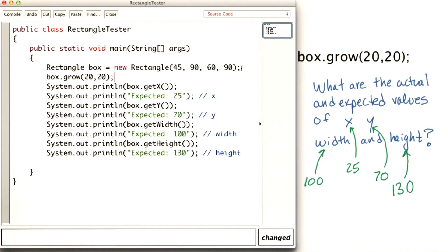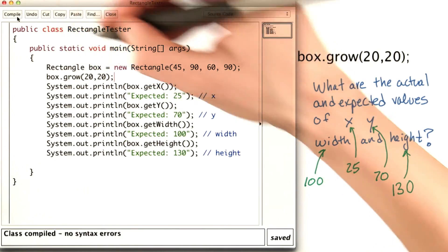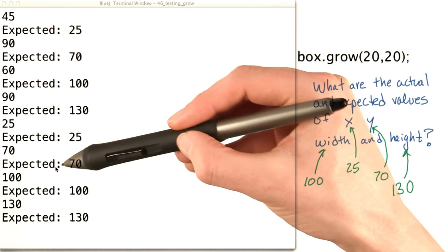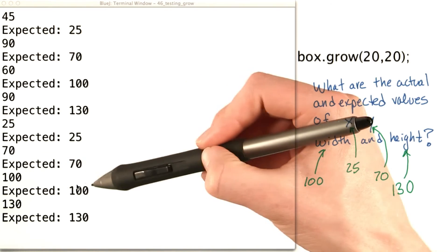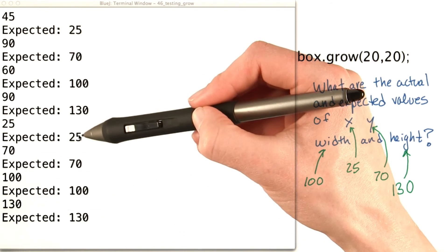Now if I run it again, I get the actual is 70, the expected is 70, 100, 100, 130, 130, and 25, 25. That's much better.